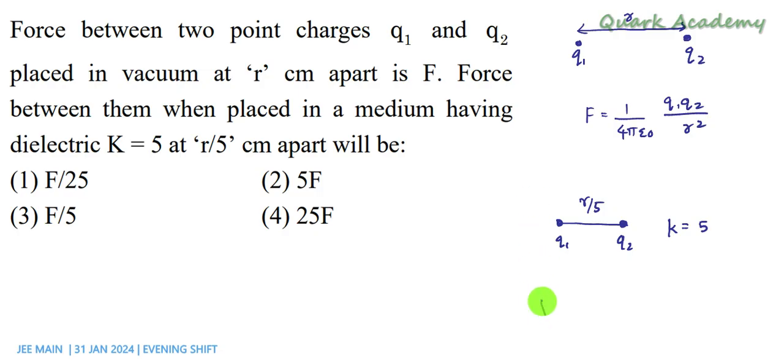So in this case, force can be written as F dash equal to 1 by 4π k times epsilon 0 into q1q2 by r by 5 squared.